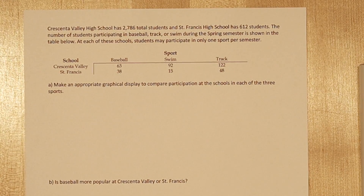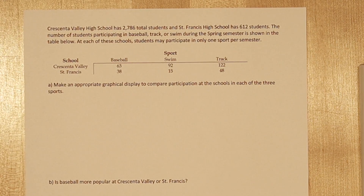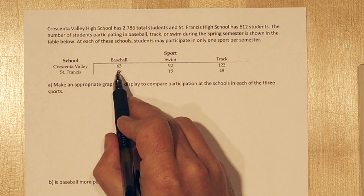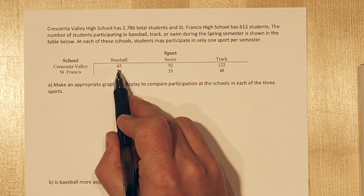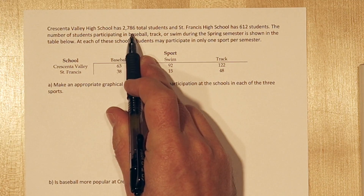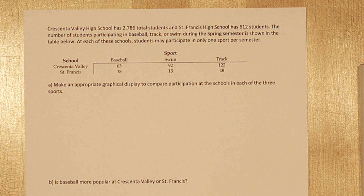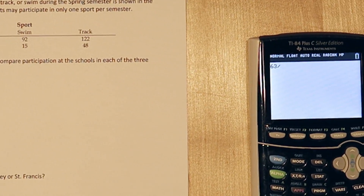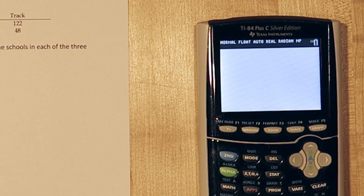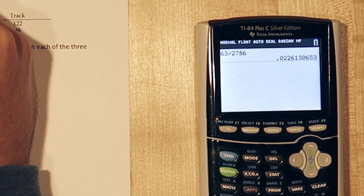Because the two schools have a different number of students, it's not appropriate to compare the raw counts, so let's look at the relative frequencies. To do that, let's take the 63 students who play baseball and divide it by the total number of students at Kersenna Valley High School, 2,786. Now we can see that about 2.3% of the students at Kersenna Valley High School play baseball.